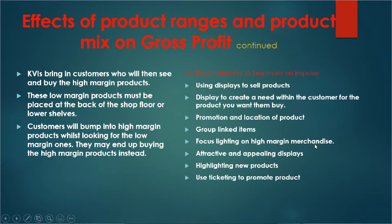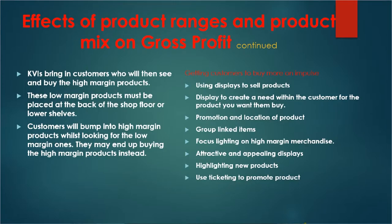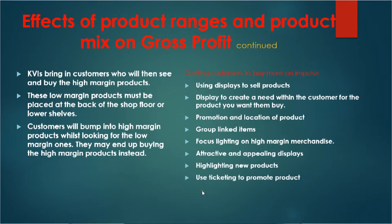Focus lighting on high margin merchandising. Clothing retailers, for example, put new products in window displays so customers can see them and buy them. You can focus more lighting in the shop and create attractive and appealing displays to attract customers to the product. Highlighting new products — you can put a signage indicating it is a new arrival or a new product. And then use ticketing to promote the product, such as 'on sale' or 'reduced.' Such tickets attract customers; they go to get more information and end up buying the product.